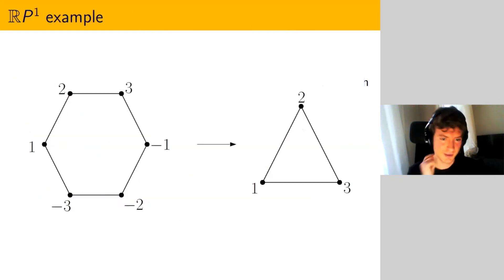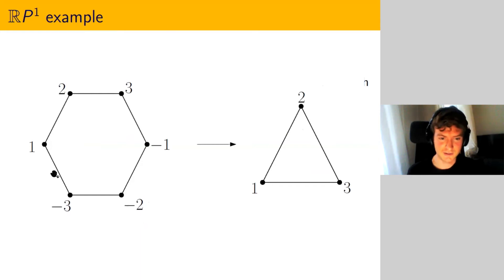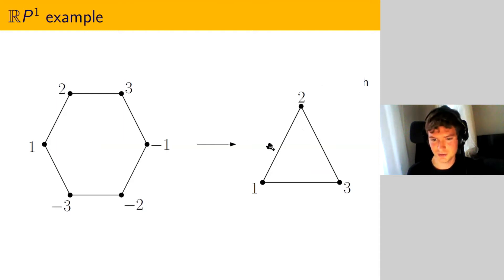A simple example: for RP^1, take a symmetric triangulation of the circle as a hexagon. The distance between opposite vertices is exactly three, and the quotient of this is a triangle, which is the minimum triangulation of RP^1.